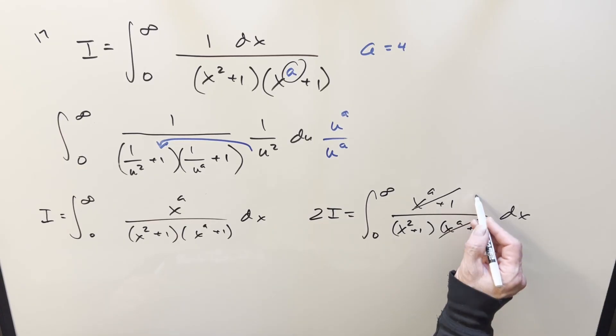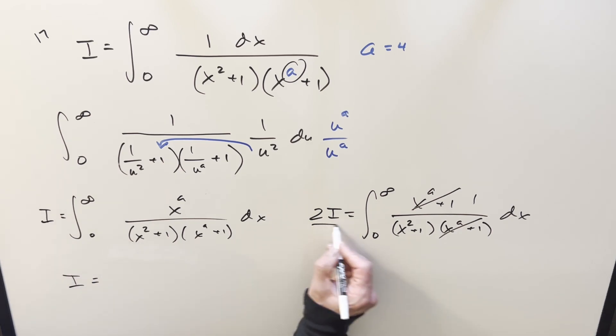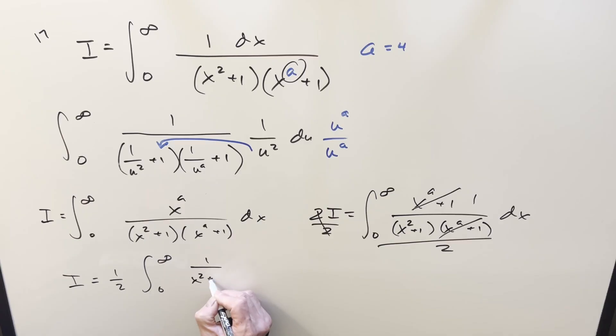So then with the cancellation here, we just have 1 over (x² + 1). That's just the arctan integral. To finish this, I do want to divide off 2 on both sides to get rid of that to isolate our answer. So we're going to have 1/2 times the integral from zero to infinity, 1 over (x² + 1) dx.